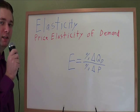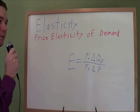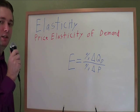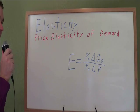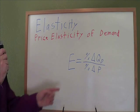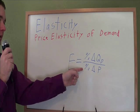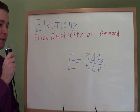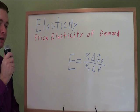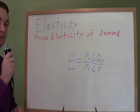This video is about price elasticity of demand, the most common type of elasticity you'll see in economics. The official formula is percent change in quantity demanded divided by percent change in price. But this video is not going to be dealing with the formula or the math behind it — it's just going to look at the concept and try to understand what it means.